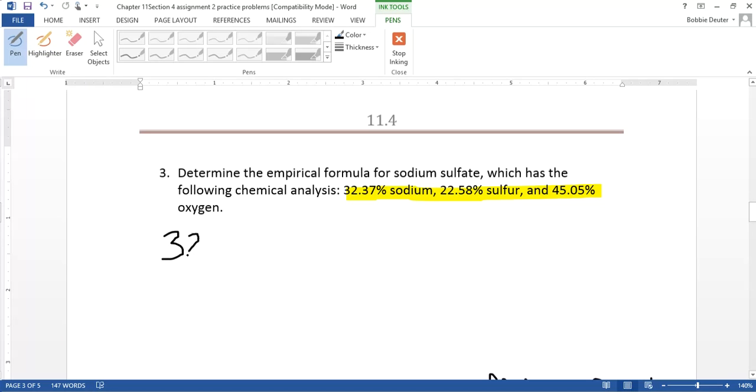We have 32.37 grams of sodium. Convert that into moles—the first step is always converting into moles. We have 23 grams of Na as the molar mass of sodium. That should be one mole, which would equal 1.4 moles of sodium.